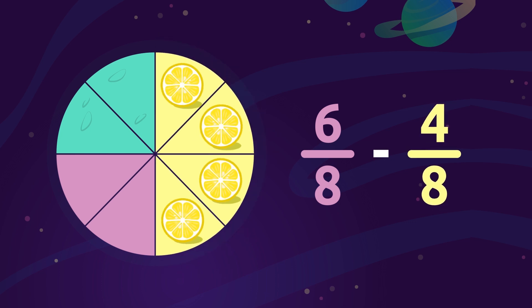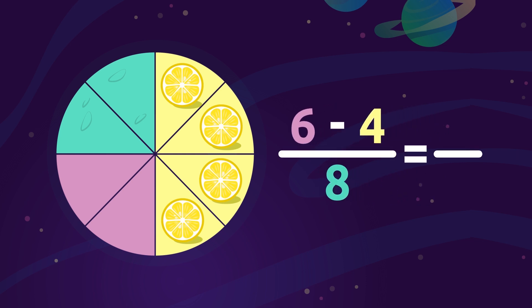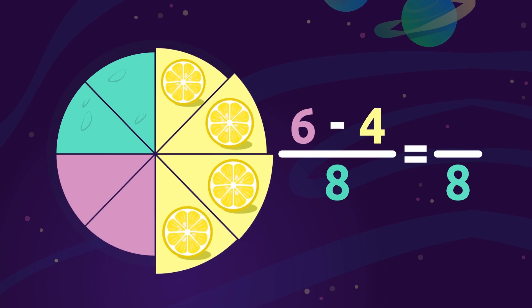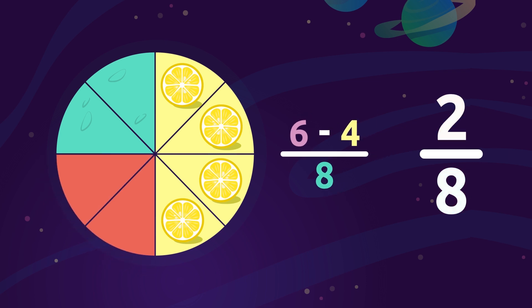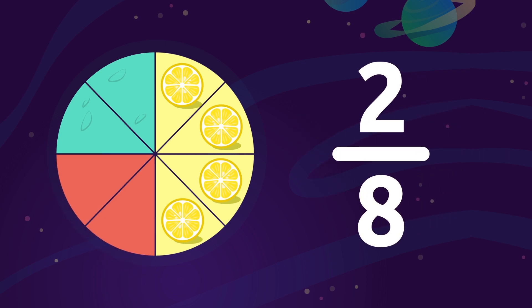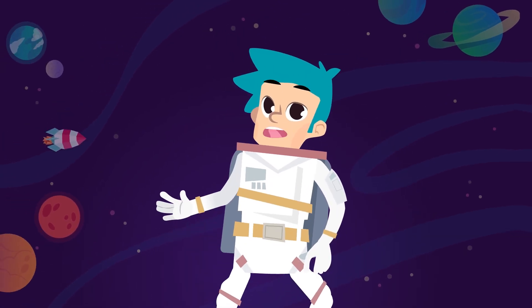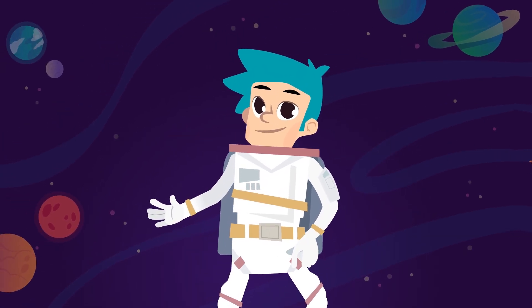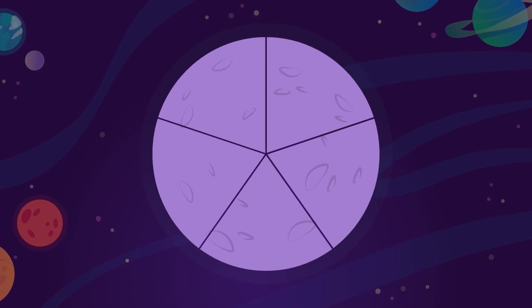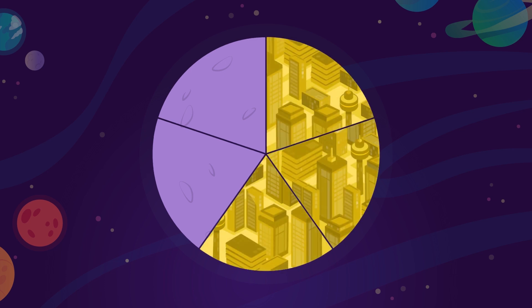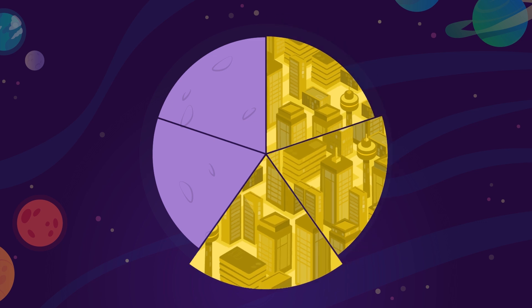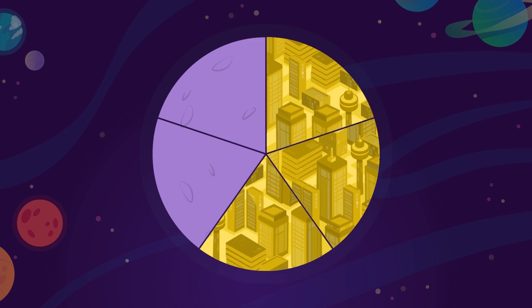Remember to put the same denominator in the answer — in this case, number 8. To calculate the numerator, we subtract 6 minus 4, which equals 2. The result is that two of the eight fields are planted with apple trees, that is two eighths. Now, planet Learnturn is divided into five equal parts. On this planet there are wooded areas and areas with houses. If they built houses on three of Learnturn's fields, how many parts of the planet are covered with woods?